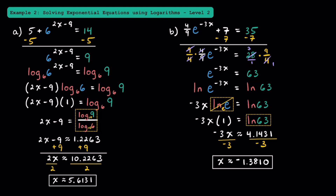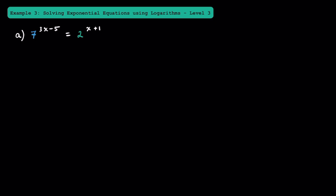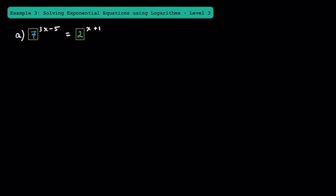While these two problems had a couple of extra steps, keep in mind that once you got the power by itself, it was just like the problems in example 1. In example 3, let's try solving this more complicated equation. We have 7 to the 3x minus 5 power is equal to 2 to the x plus 1 power. What makes this more challenging is that we have two powers with different bases.